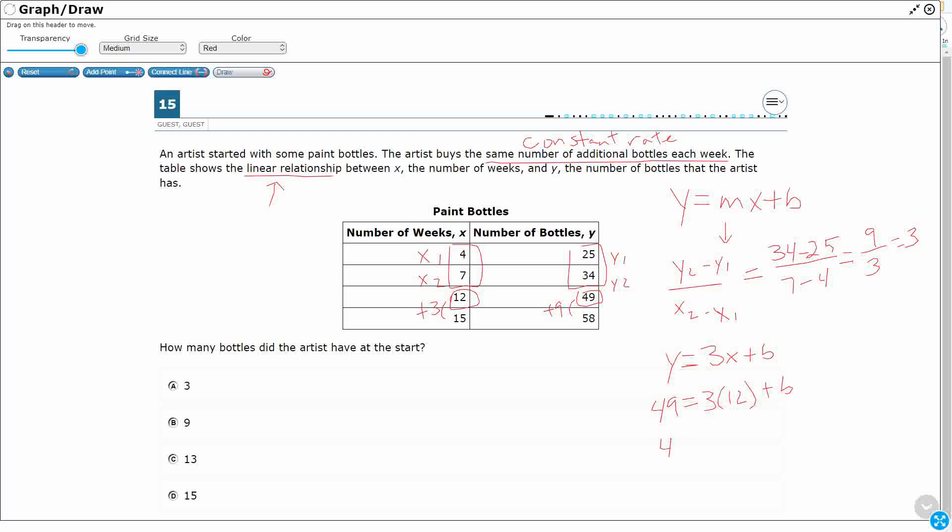Alright, so 49 equals 3 times 12 is 36 plus b. And let's see. We need to subtract 36 from both sides. And what we're going to get here is b equals 13. Alright, so now it looks like we can say y equals 3x plus 13.